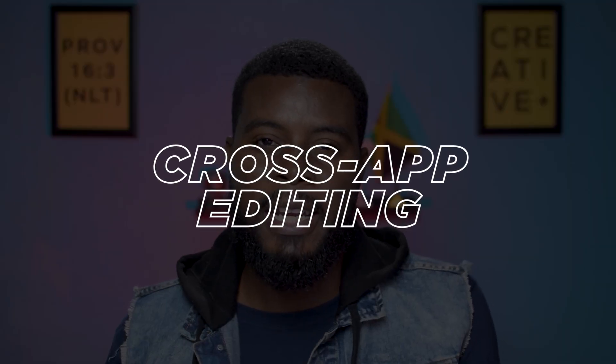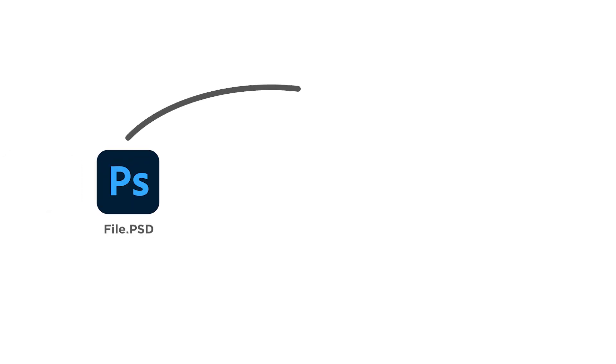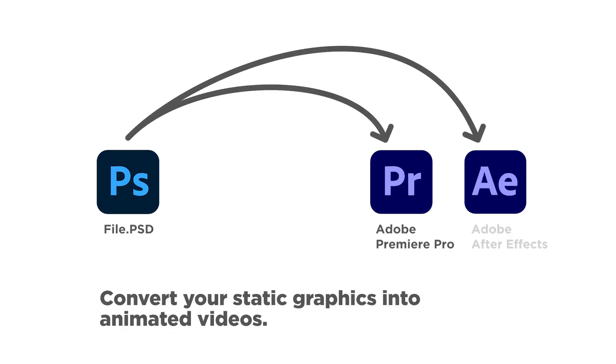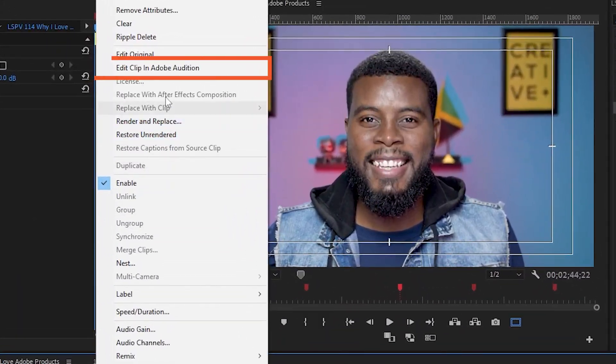The next thing I love about using Adobe's apps is the cross-app editing. If I'm working with a file in Photoshop, I can use that same file in Premiere Pro and get each of my layers as editable video tracks. And if I'm editing a video and I want to edit an audio track within that video, I can just right-click and open that audio track within Adobe Audition. So everything I need for my workflow to create my YouTube videos is all right there.